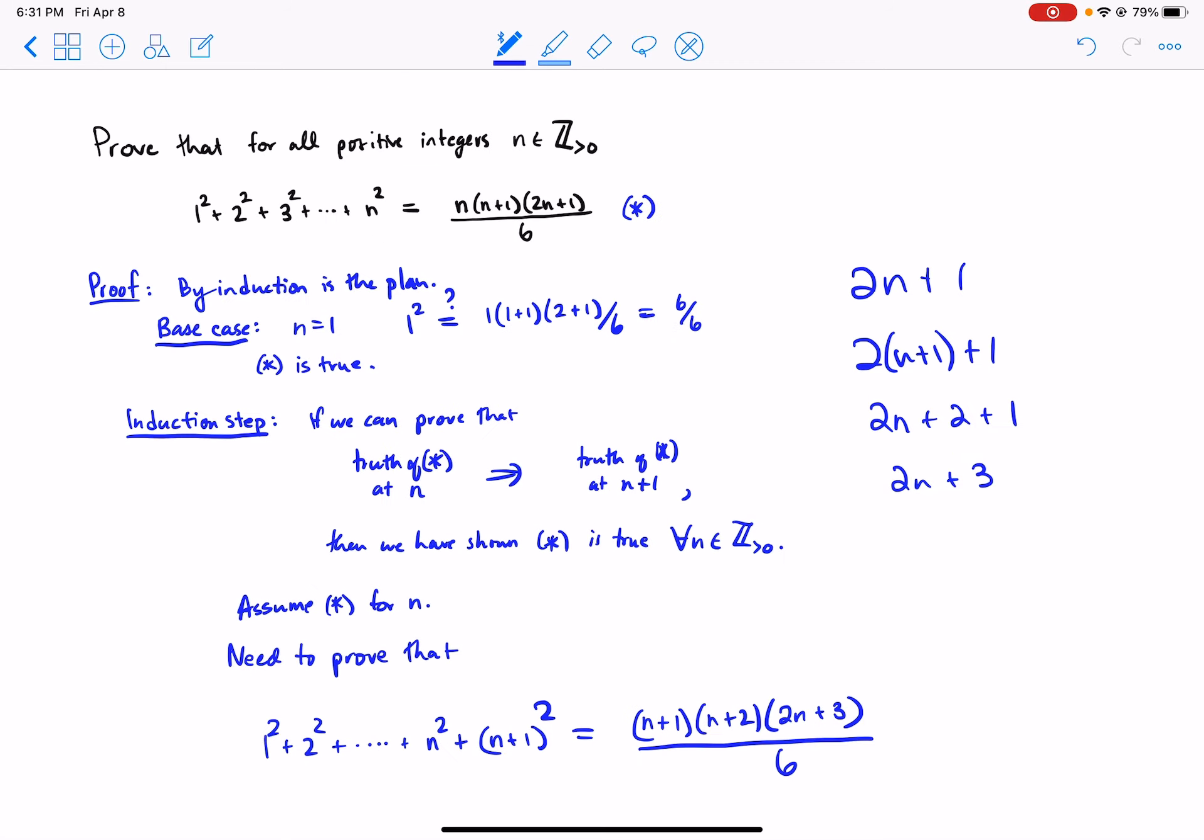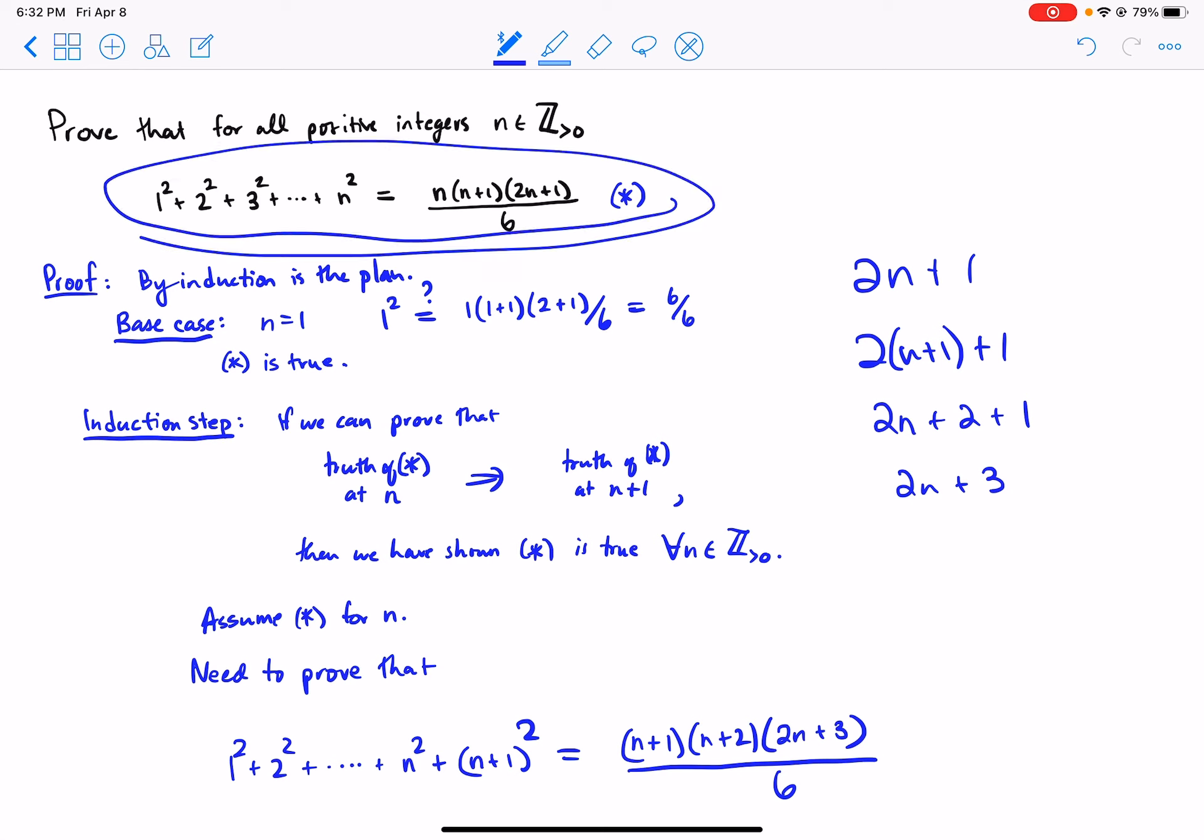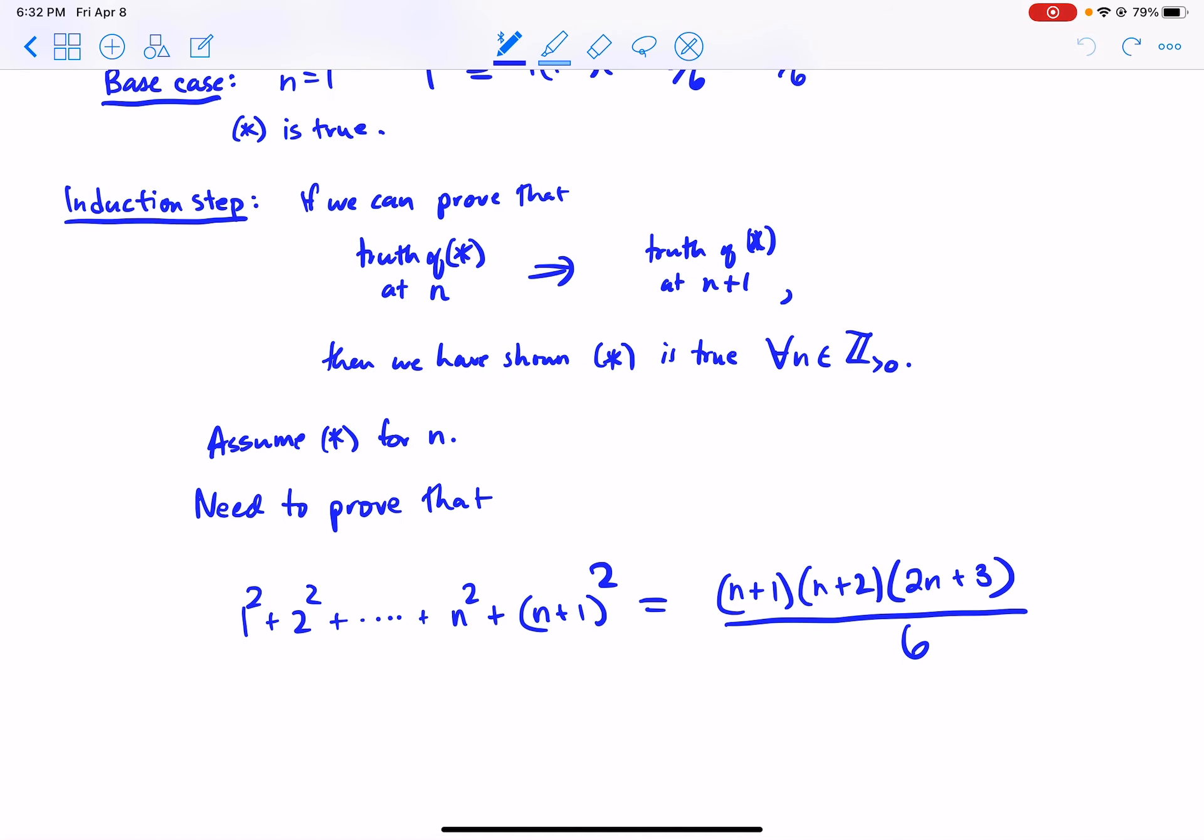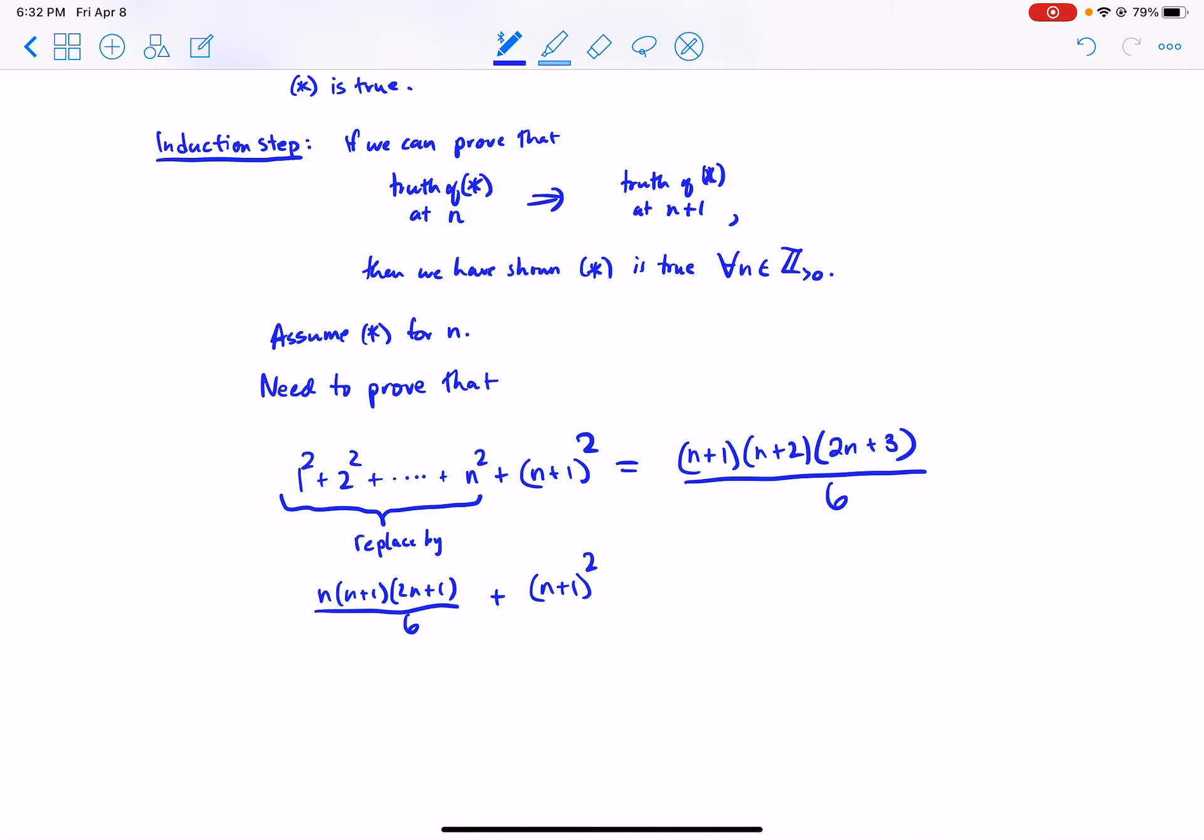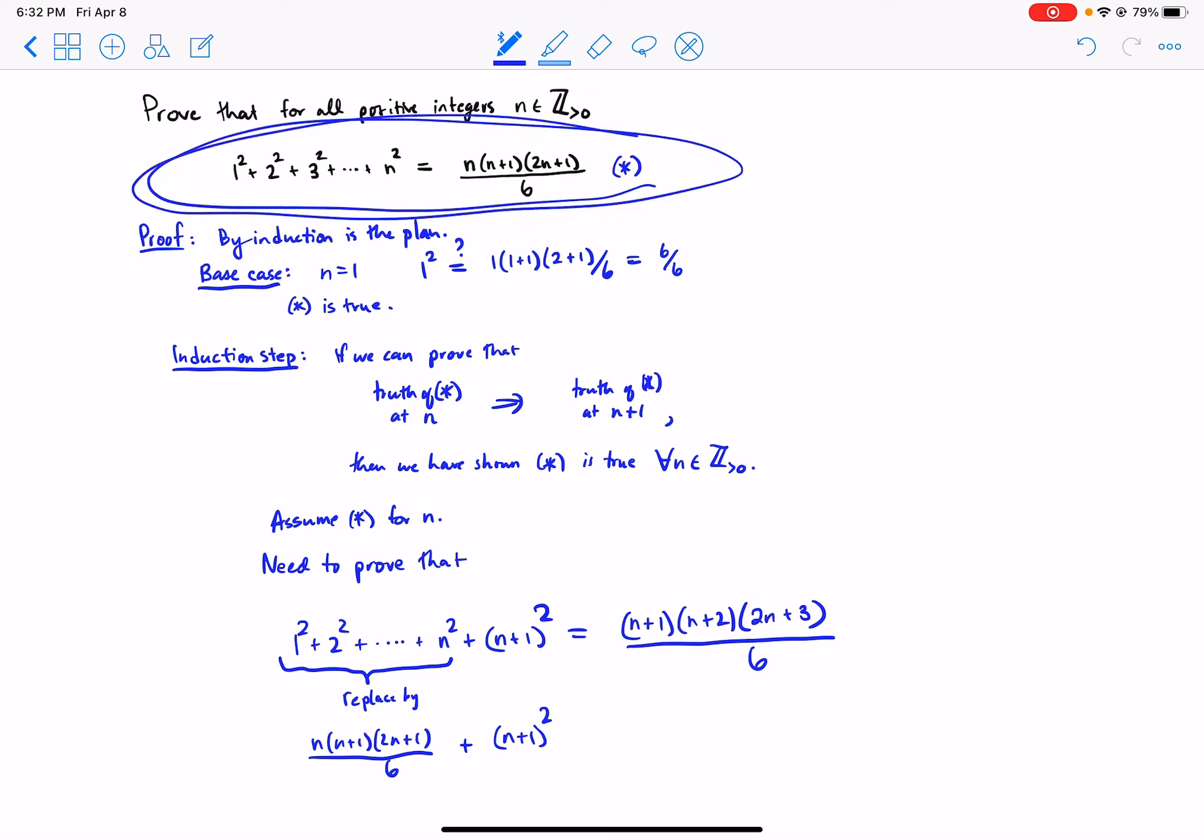So all I did is I just rewrote the thing we're trying to prove in the case where n gets replaced by n plus 1. Okay. And now we need to prove that. We're assuming it's true for n, which means that we can replace by n, n plus 1, 2n plus 1 over 6. Okay, so we're assuming that this statement holds when n is just n, and then we're going to show that just assuming that, just replacing this, will immediately imply that the statement is true for n plus 1.